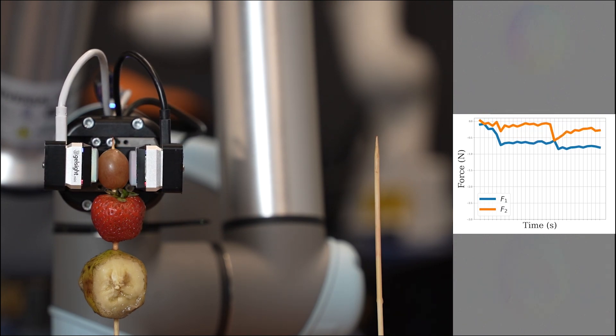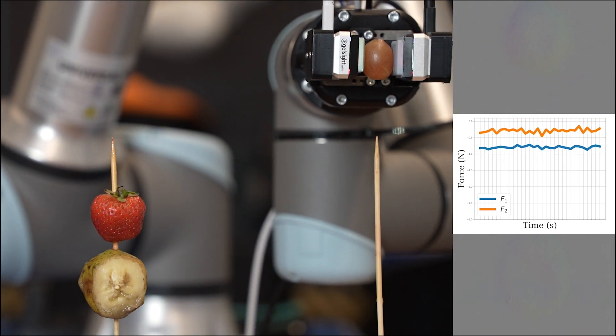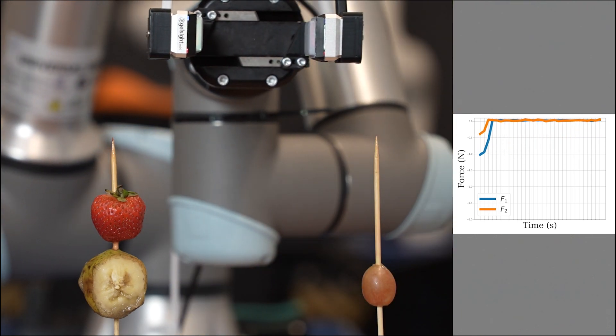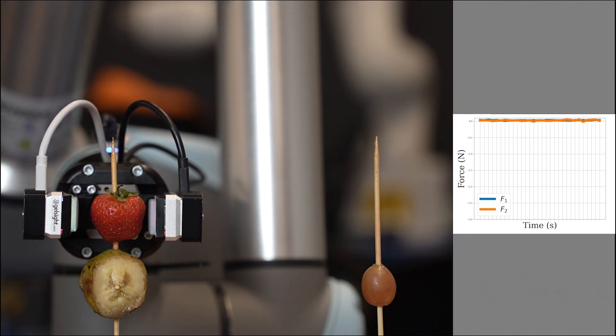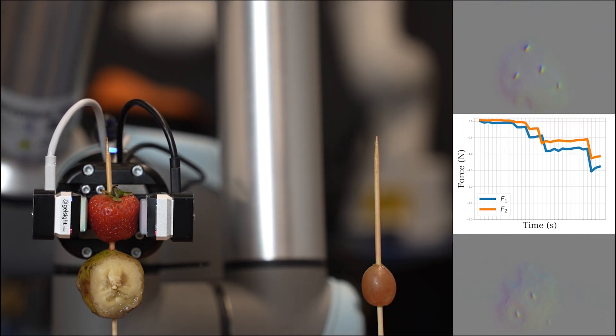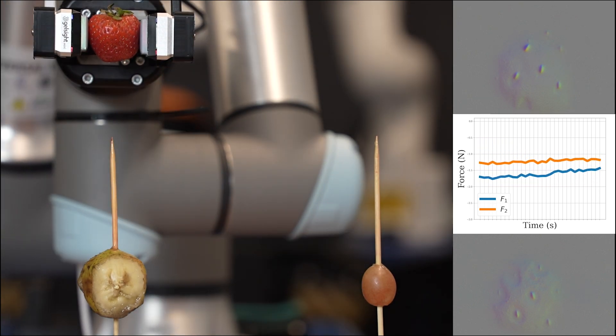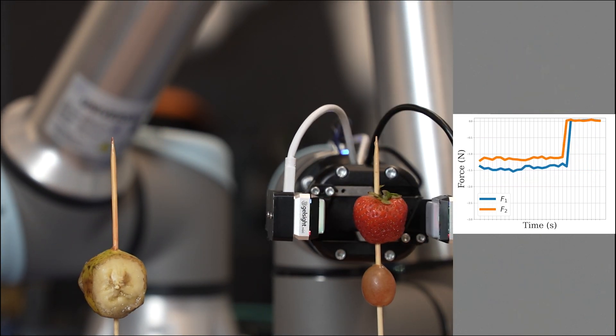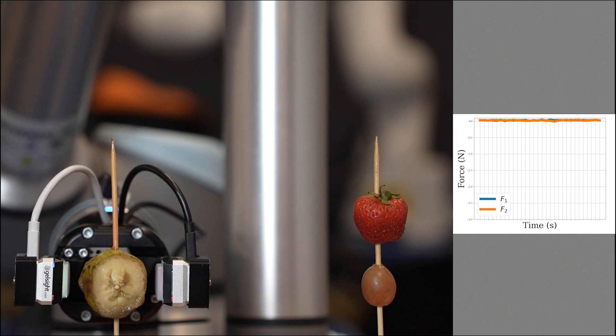For instance, we tried to pick up delicate objects like fruits. This level of accuracy of estimating grasp force is crucial for robots to handle delicate objects. Our research explores this challenge, aiming to find the ideal balance between a firm grip and avoiding damage.